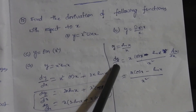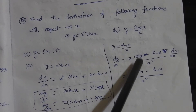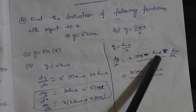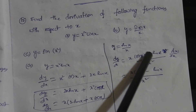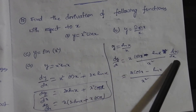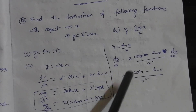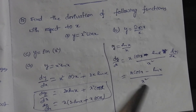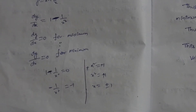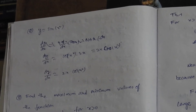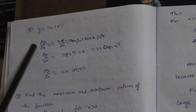Next, for y equals sin x by x, we find dy by dx using the u by v (quotient rule) method: v into du minus u into dv, all divided by v squared. So x as it is, sin x differentiates to cos x, minus sin x as it is, and x differentiates to 1. That gives x cos x minus sin x, divided by x squared.